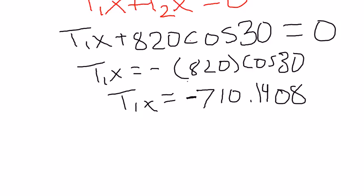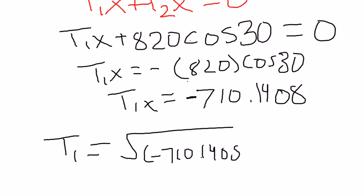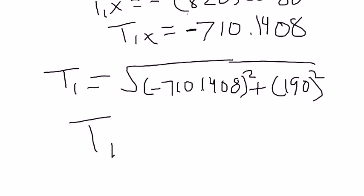Then you're just going to find the total tension using the Pythagorean theorem: 710.1408 squared plus the square of 190. So your tension comes out to be 735.12.